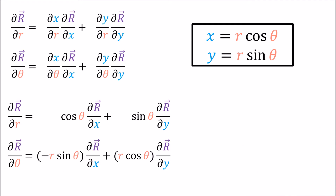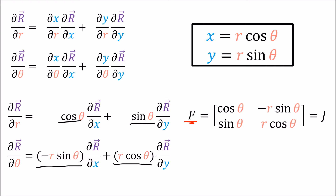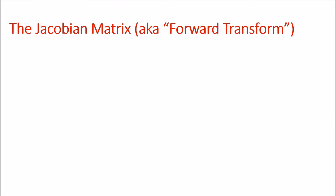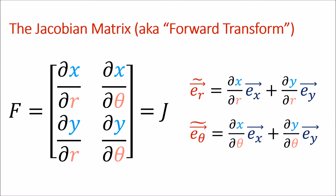Just like we did with the coefficients at the beginning of the video, these coefficients in this matrix would be our forward transform. I'm going to rewrite these matrix entries for convenience. You'll notice that I've written this matrix to be equal to F for forward, but I've also written that it's equal to J — that's because this matrix is also called the Jacobian matrix. So the Jacobian matrix, this matrix of partial derivatives, is really just the forward transform matrix that contains all the coefficients needed to build up a new set of basis vectors using an old set — in this case, building up the polar basis vectors using the Cartesian basis vectors.